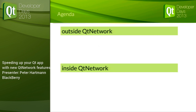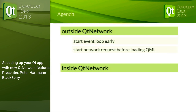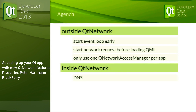The agenda is split into 'outside QNetwork' and 'inside QNetwork.' Outside: when you start your requests and load QML — best practices like starting the event loop early, starting a network request before loading QML, and using only one QNetworkAccessManager per app. Inside: the details of network requests — DNS lookup, TCP handshake, SSL handshake, and HTTP request/reply.